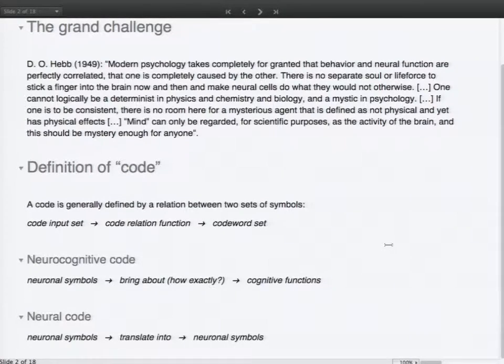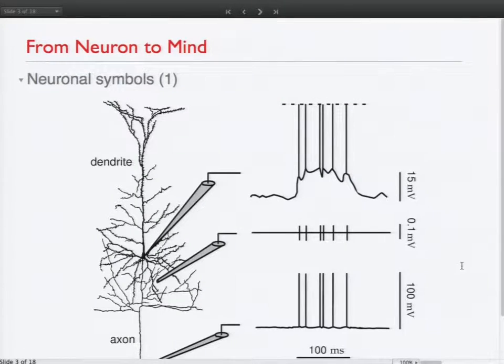Now this is essentially a data mining task, because you can record brain activity, but in the very beginning you don't know what you're looking for. So you have to define what neuron symbols could be. And on the level of a single neuron, it's pretty clear what this would be.